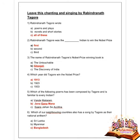Next question: which of the following poems was composed by Rabindranath Tagore and given to every Indian? Options are Vande Mataram, Jana Gana Mana, and Sare Jahan Se Achcha. Option B is correct — Jana Gana Mana. Next question: which neighboring country also has a song by Tagore as their national anthem? Options are Sri Lanka, Myanmar, and Bangladesh. Option C is correct — Bangladesh.